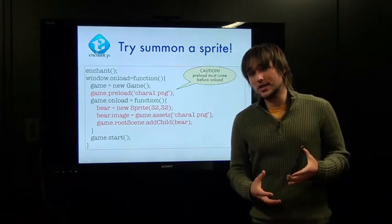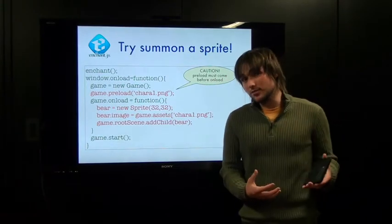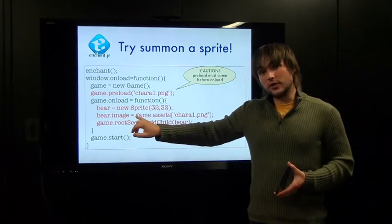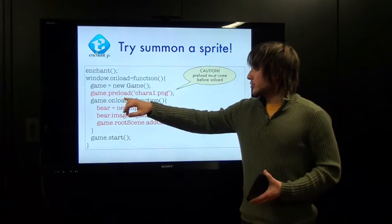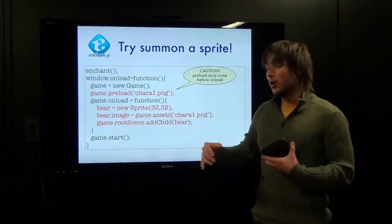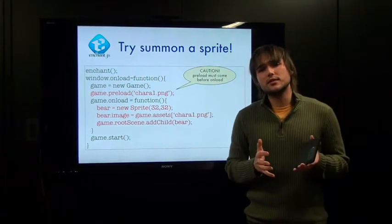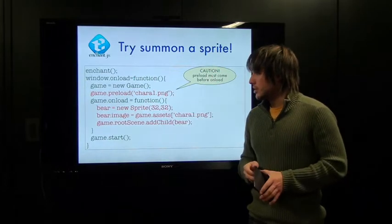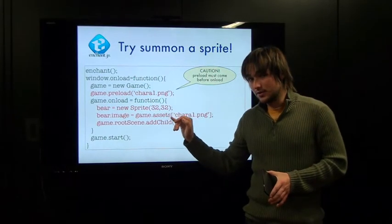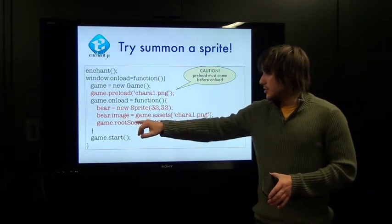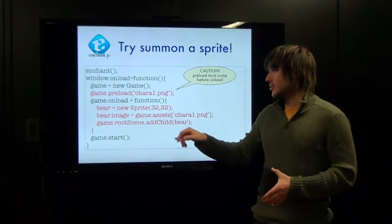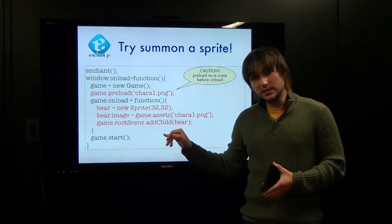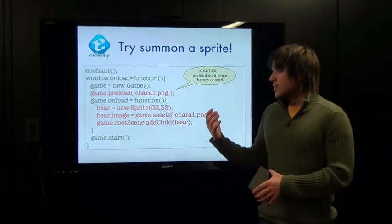So, the way Enchant.js works is you have to preload your images. That is why the game object has a preload method that is called here, before we write the onload function that actually contains our main game. Here we're saying game.preload chara1.png, and what that does is it puts it into sort of like the resource bucket that Enchant.js has access to when it is running stuff. So, we preload chara1.png, and then we say new sprite, and I'm going to talk about this 32 and 32 a little bit later. And then we say bear.image equals chara1, basically. We're calling game.assets, so we're accessing that bucket that we filled up with game.preload. And then, we are adding it to the root scene, which, like we saw in the label example earlier, makes it visible.